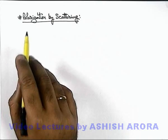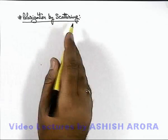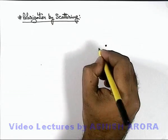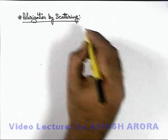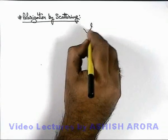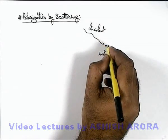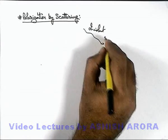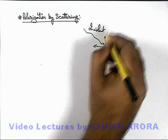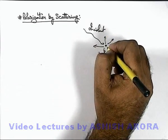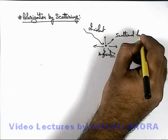Let us now study the method of polarization by scattering. We all know the concept of scattering: if there is a molecule or an atom on which light is incident, then a part of the incident light is absorbed and re-radiated in various directions. This re-radiated light by the atom or molecule in various directions we call scattered light.